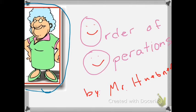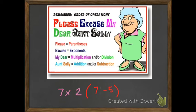This is Aunt Sally. I want you to keep that in your head, keep that in your brain. Order of operations is just the order. If you have an equation, if you have a number sentence, Aunt Sally is going to help you decide what you do first. It's the order of how you solve it.